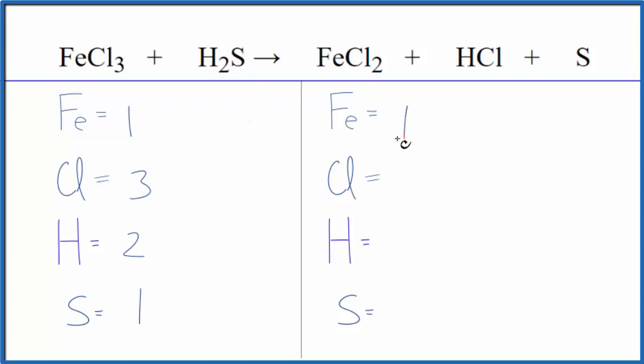Product side, we have the one iron, and in the chlorines we have two here. Don't forget this chlorine here with the HCl. That gives us a total of three, one hydrogen, and then one sulfur. So make sure you get this number right here. It looks like everything is balanced except here for the hydrogens.